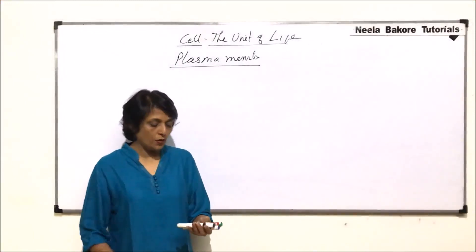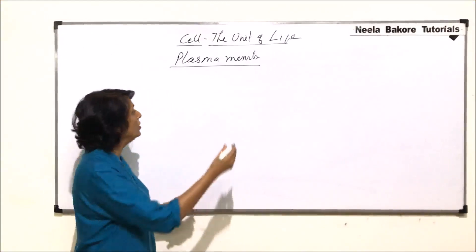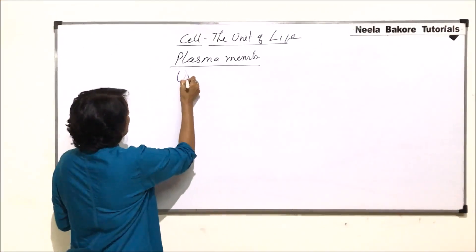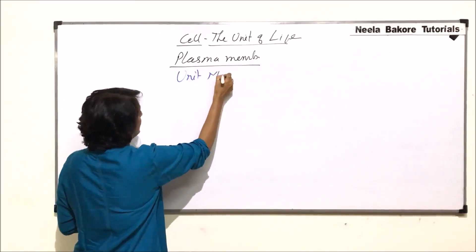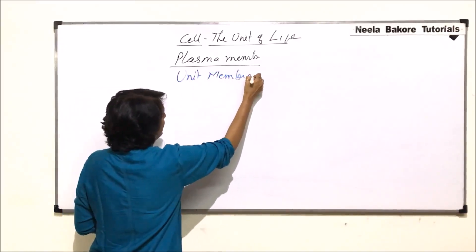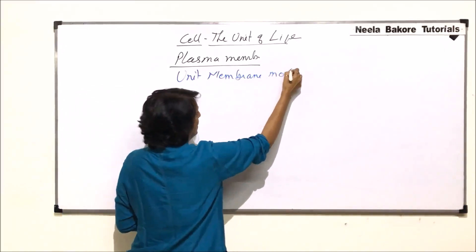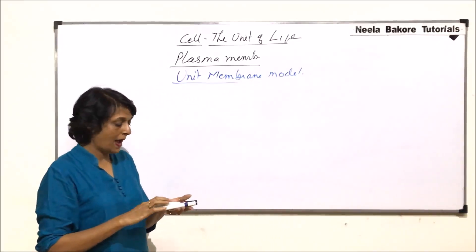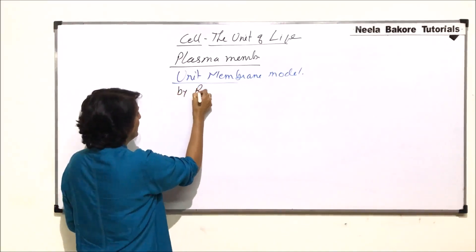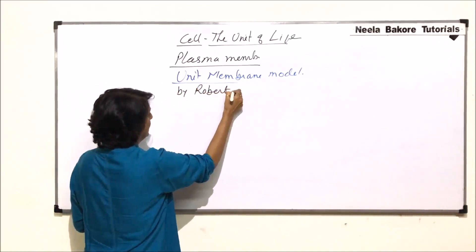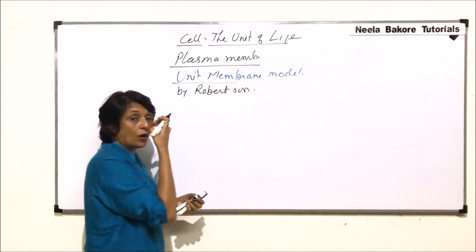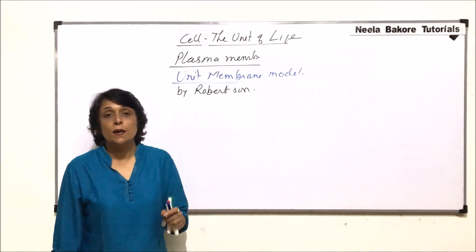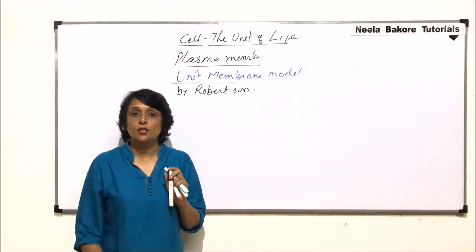The next model we are talking about is the Unit Membrane Model of the plasma membrane, which was proposed by Robertson. According to Robertson, the model has beta fibrous proteins.